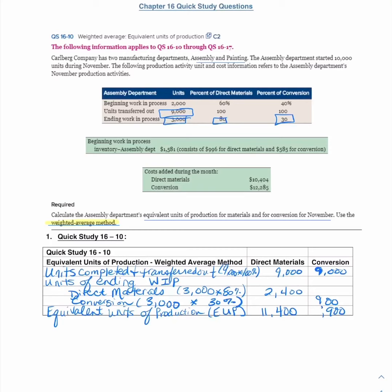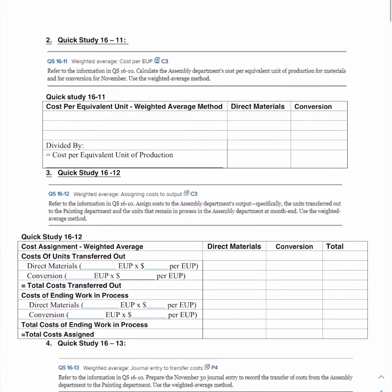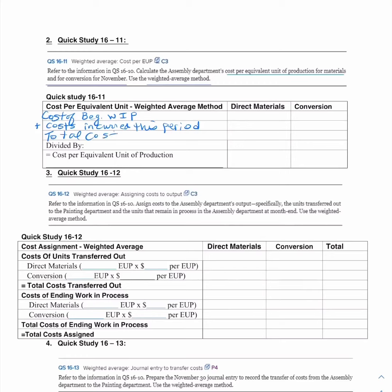Now moving to Quick Study 16-11: calculate the assembly department's cost per equivalent unit for materials and conversion. The approach is: cost of beginning WIP plus costs incurred this period equals total costs, then divide by equivalent units of production from the previous question to get cost per equivalent unit of production.